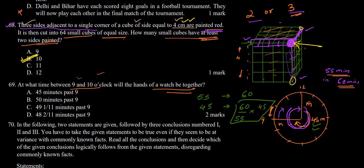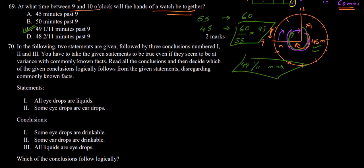Calculating (60/55) × 45 gives 49 and 1/11 minutes. So 49 1/11 minutes after 9 o'clock, the minute hand will come together with the hour hand. This matches option C, which says 49 1/11 minutes past 9. So the answer is option C.